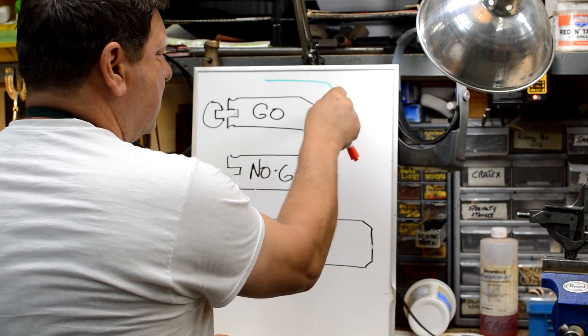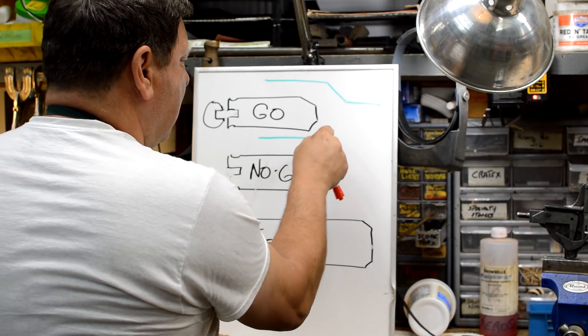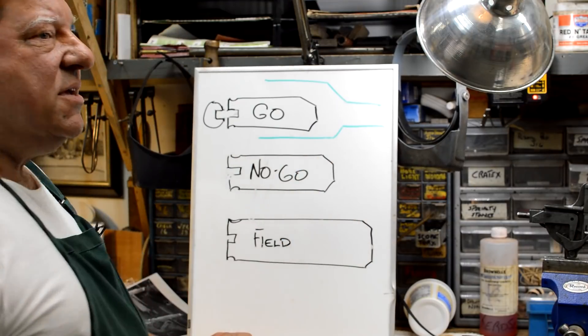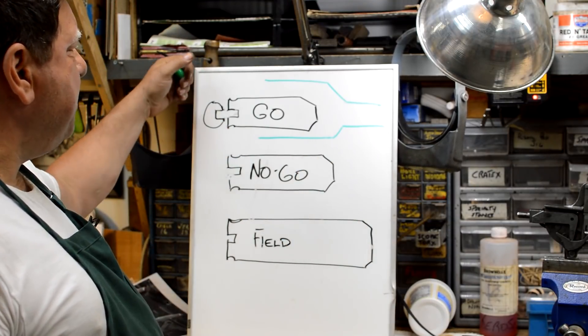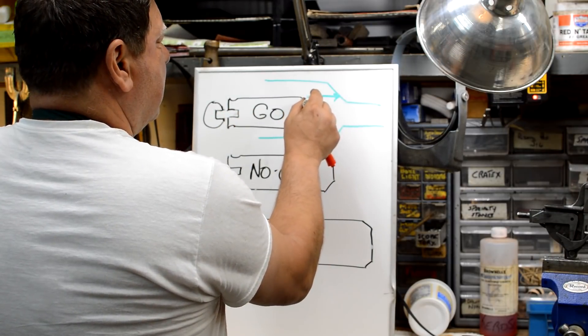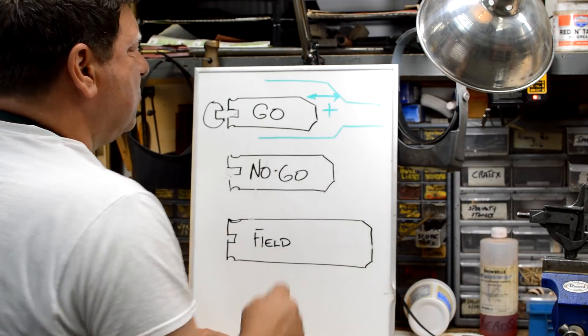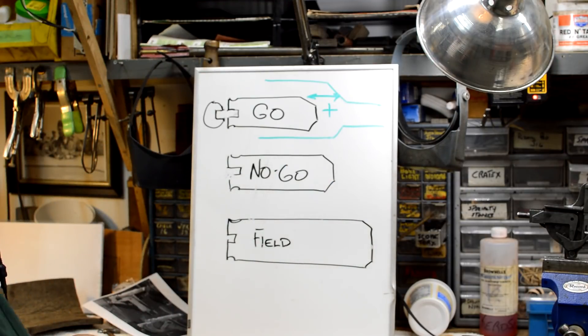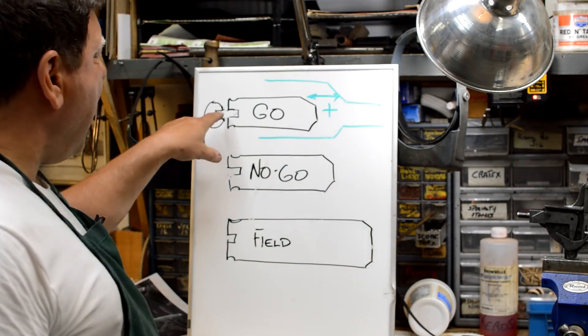With the go gauge, the bolt should be able to come up against the back end of this go gauge and there should be plus room available. There's a notch cut out on the back of some of these to allow the extractor to fit in.